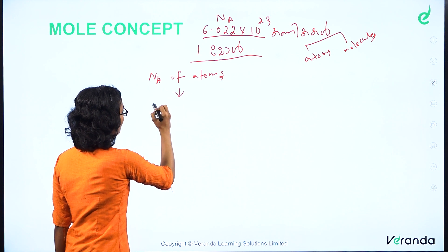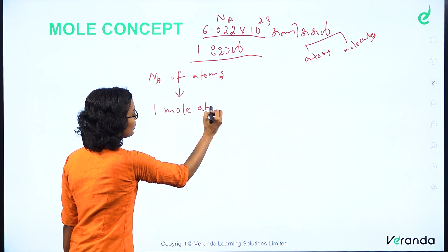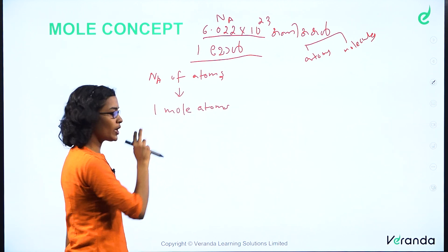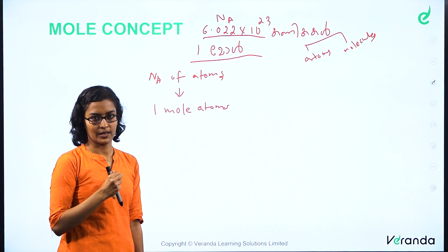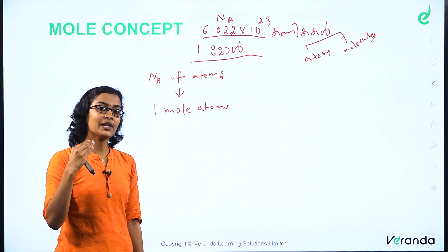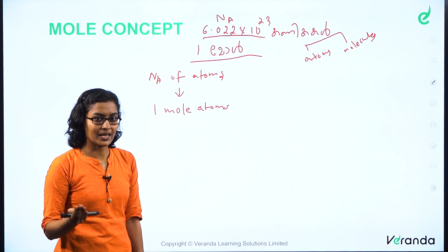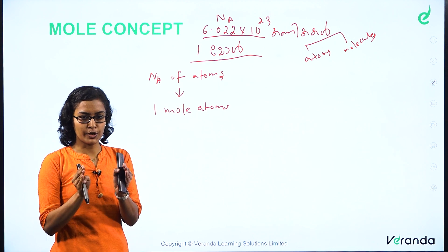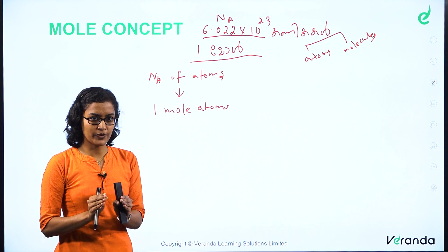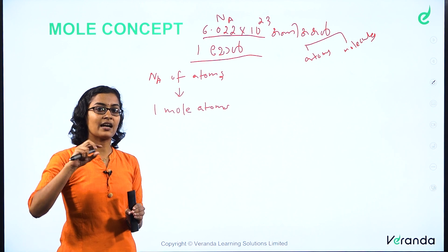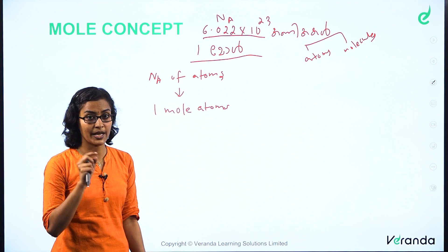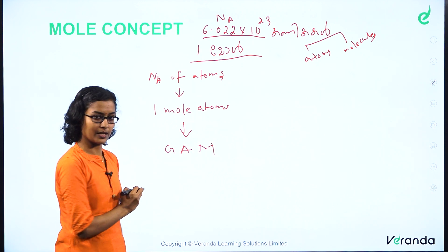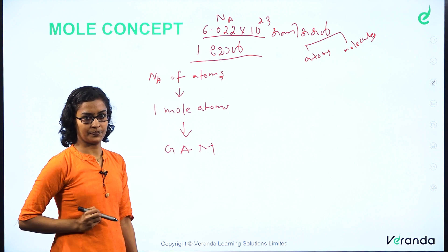How do we say it? One mole of atoms — what do we say? One mole of atoms has a mass. I will express the mole: that is the mole — atomic mass. That is the mole — Avogadro's number of atoms.